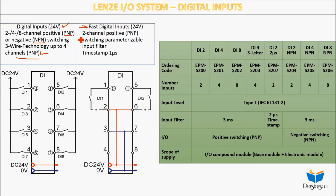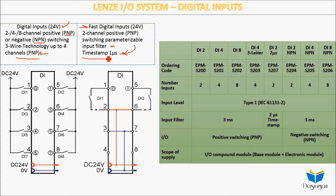For the fast digital inputs, you can use two-channel positive PNP switching with a parameterizable input filter. The timestamp is one microsecond — this is a really fast speed. This is the fast digital input.